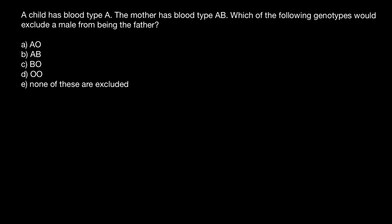In the ABO blood group system, we have three alleles: A, B, and O. Alleles A and B are co-dominant, and allele O is recessive to both allele A and B. That means alleles A and B are dominant over allele O.